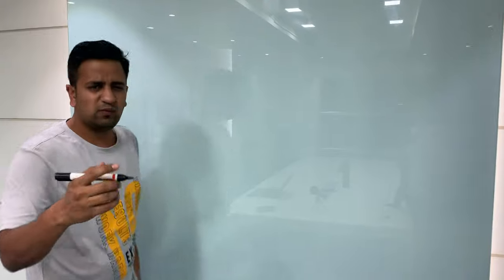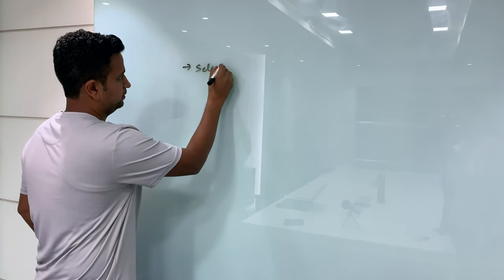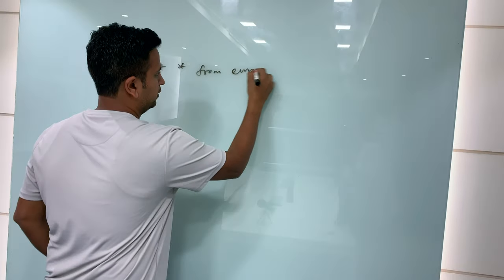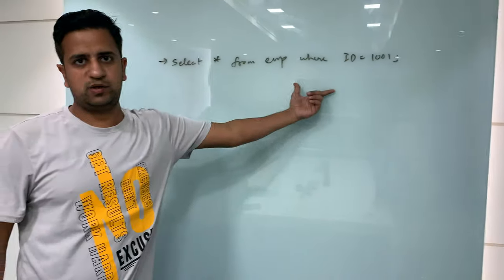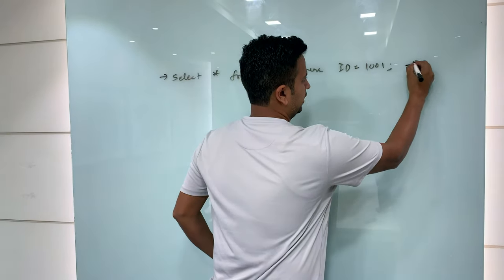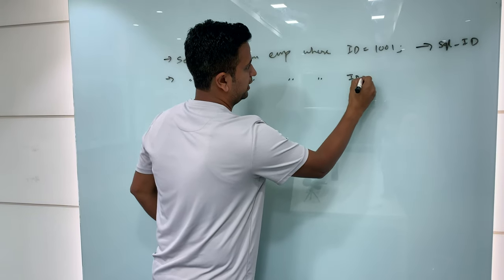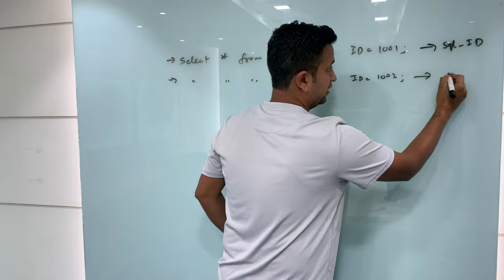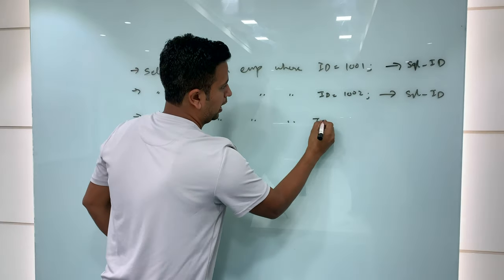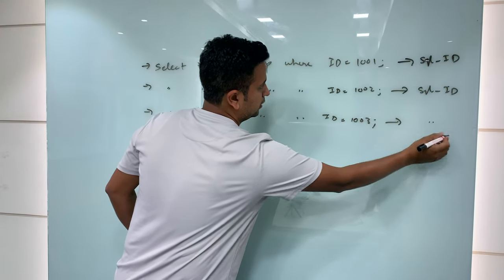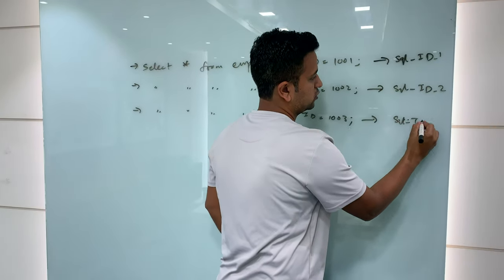Let me take an example. Consider the SQL query: SELECT * FROM EMP WHERE ID = 1001. Oracle generates an SQL ID for this statement. A second statement — WHERE ID = 1002 — will have a different SQL ID, and WHERE ID = 1003 will have yet another different SQL ID. Let's call them SQL_ID_1, SQL_ID_2, and SQL_ID_3.